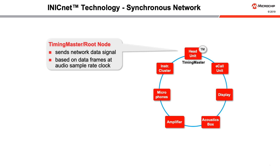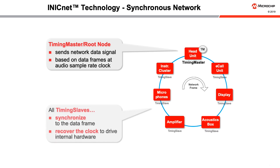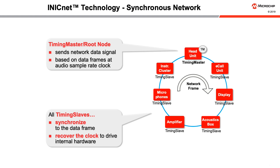Only one timing master must be active in the network at a time. All other devices in the network are called timing slaves. They synchronize to the network clock that is set by the frame rate of the timing master. Synchronization at a common audio sample rate clock and multiples thereof greatly simplifies networked audio applications.